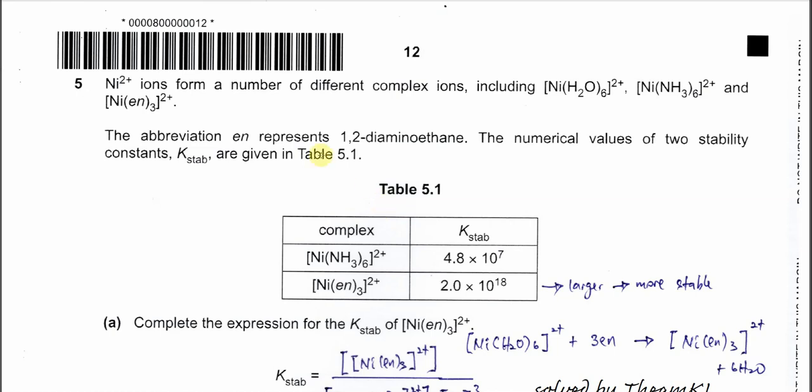Question 5. Nickel two ions form a number of complex ions including this one, this and this. They have different ligands: water, ammonia and this EN. The abbreviation EN represents 1,2-diaminoethane, and the numerical values of the two stability constants are given in Table 5.1.